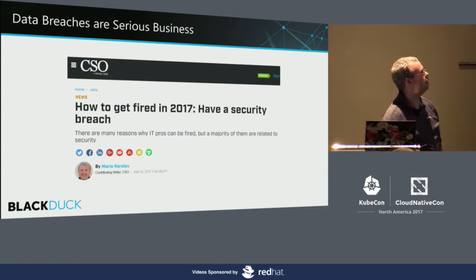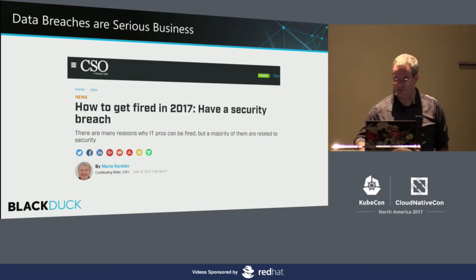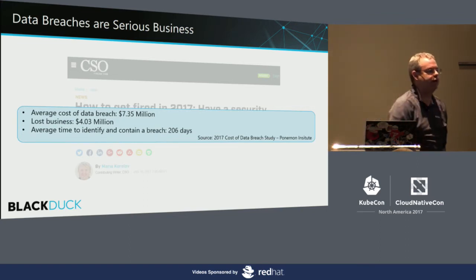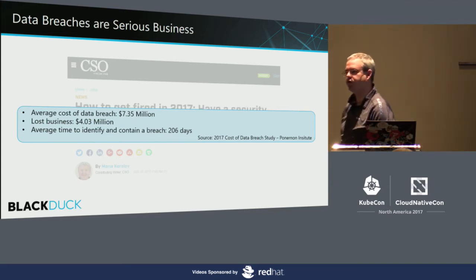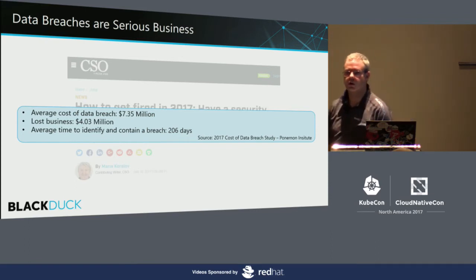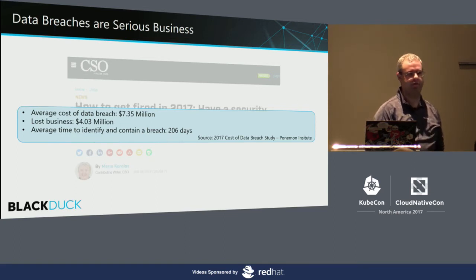This prescient article came out in March and said the easiest way to get fired in 2017 was to have a data breach. And little did we know we'd have a rather substantial one this year. Before that one was disclosed, we had a report from IBM and the Ponemon Institute: the average cost of a data breach being over $7 million, the lost business associated with it being $4 million, and importantly, 206 days — over half a year — for organizations to recognize and contain the breach. That's the industry average.